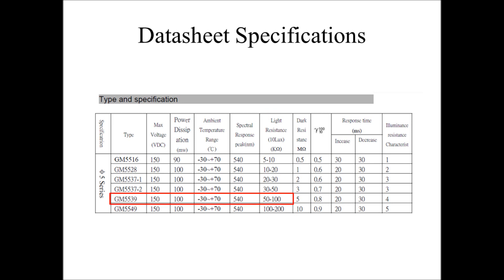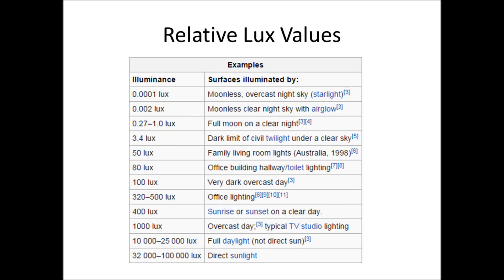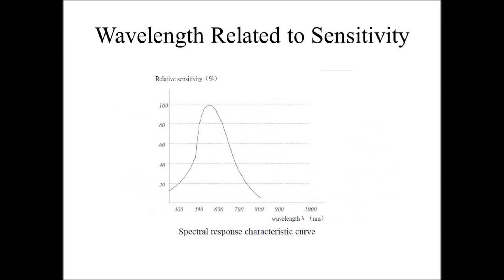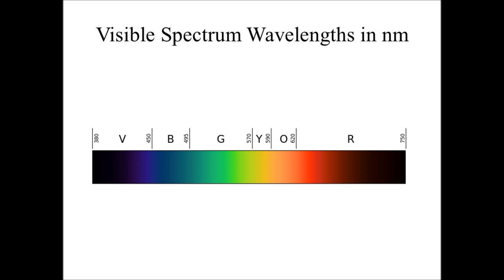To put 10 lux into perspective, let's take a look at this Wikipedia table. It is somewhere between the dark limit of a twilight sky and the lighting of an Australian living room in 1998. The spectral response peak is the same for this family of photoresistors — its value is 540 nanometers. This means the behavior of the photoresistor will change most greatly when exposed to wavelengths of light of 540 nanometers, which in the visible spectrum corresponds to shades of green.